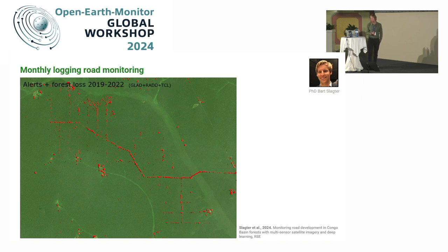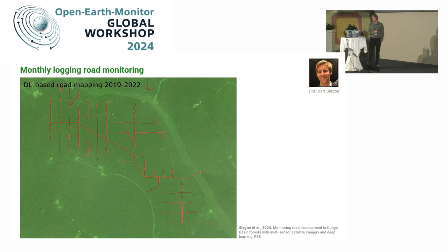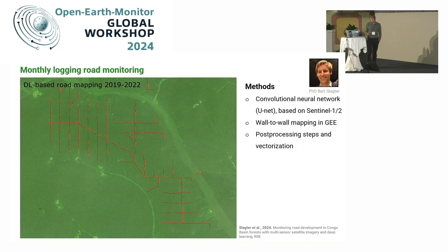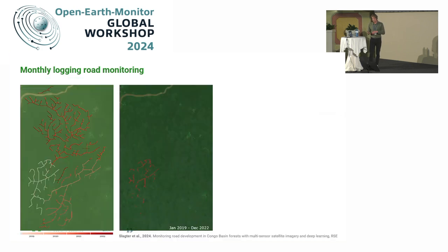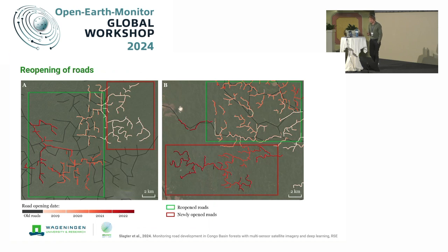We were able to go to something much more accurate now, where we have very accurate logging road information mapped. We did it with a CNN based on Sentinel-1 and Sentinel-2 data. We map logging roads monthly and then vectorize the data, so all data is available as vectors. Here's an example of how we are now able, because we do it monthly, to track logging road developments over time.